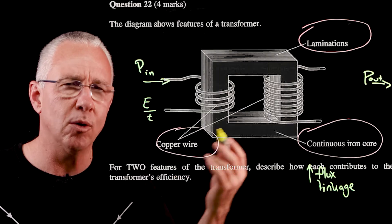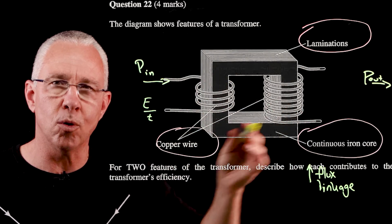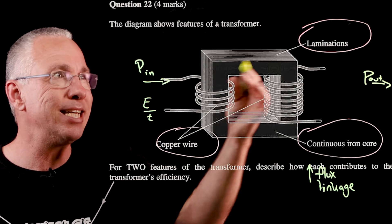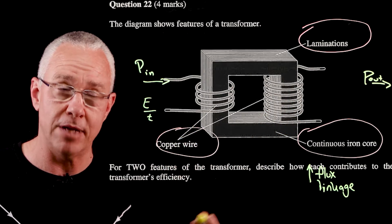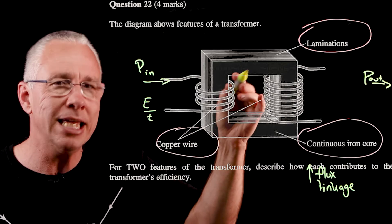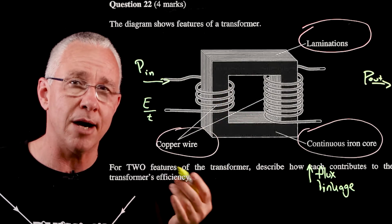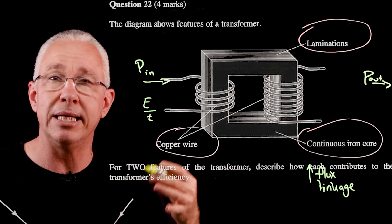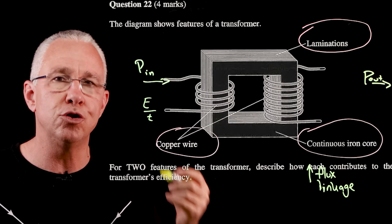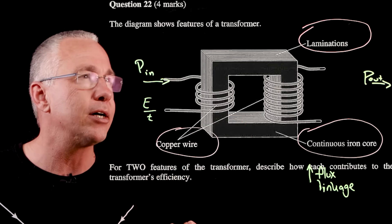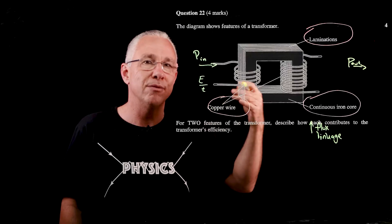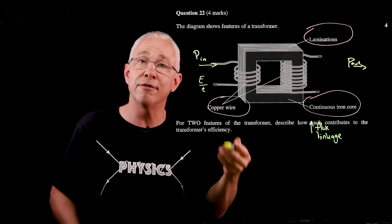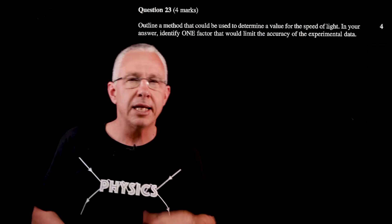The third feature is lamination. Although the iron core increases flux linkage, it also experiences a rate of change of flux itself, causing eddy currents — circular electrical currents that generate heat and cause energy loss. Lamination reduces the production of those eddy currents, so more energy is transferred from the primary coil to the secondary coil, increasing efficiency.